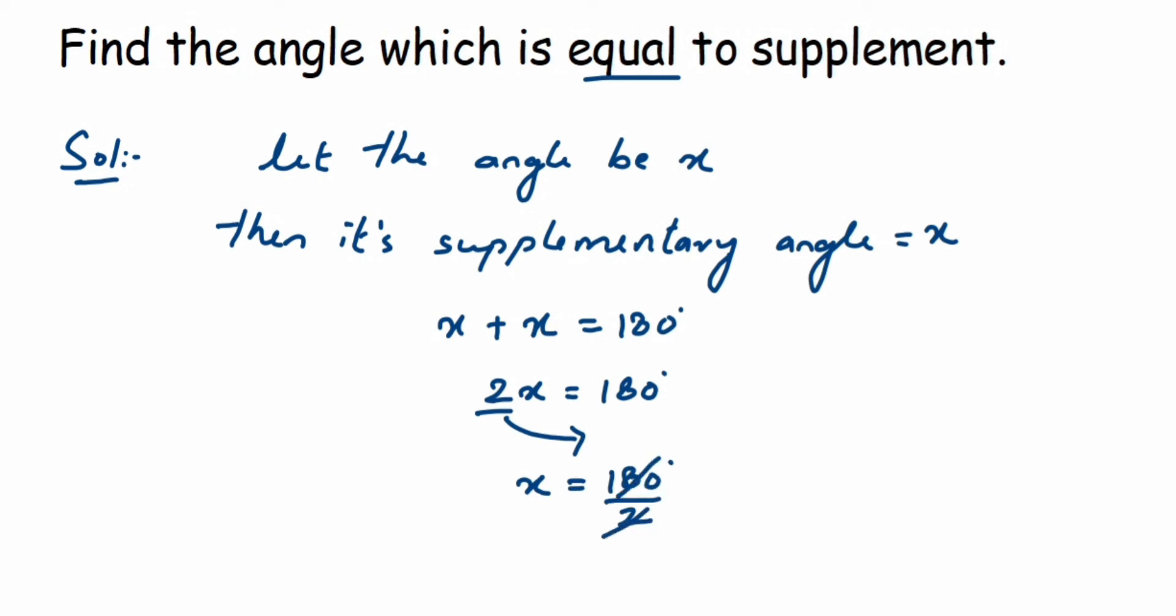Cancel them, so 2 into 1 and then 2 into 90. So therefore x is equal to 90, then its supplement will also be 90. So 90 plus 90 is 180 degrees. That's it, it was a simple question.